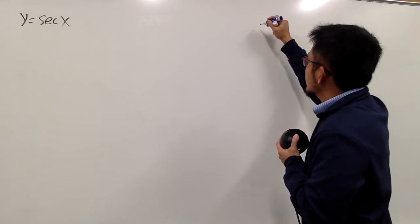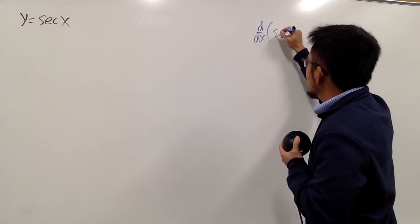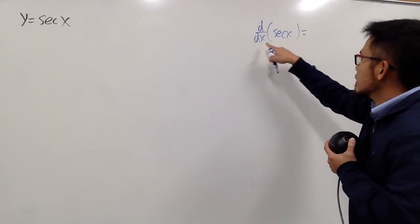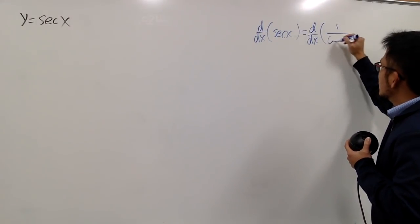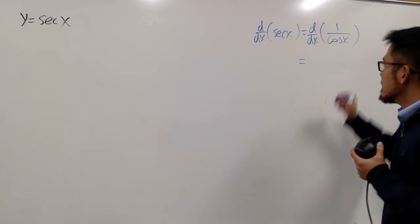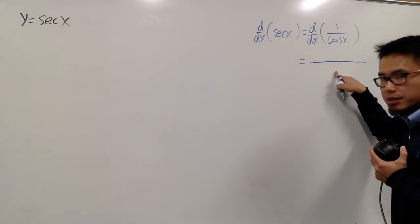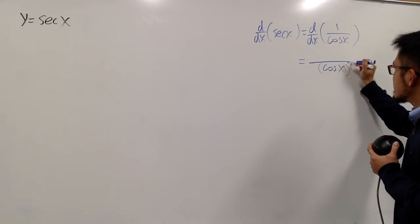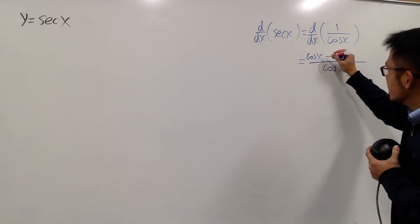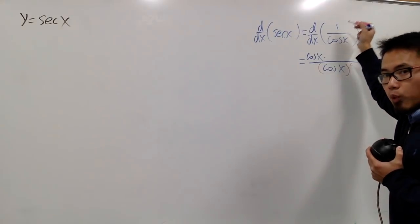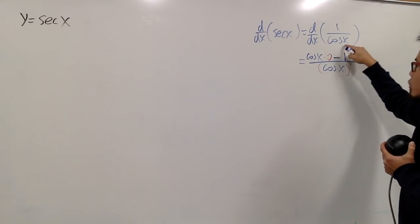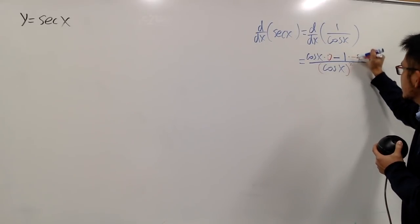To differentiate secant x — we know that secant x is the same as 1 over cosine x, so this is the same as differentiating 1 over cosine x. By looking at this, we can use the quotient rule. We will have to square the denominator first, so I'll put cosine x in parentheses and then square that. On the top, we will have the denominator first — that's cosine x — and we multiply by the derivative of the top. The derivative of 1 is equal to 0. And then we minus the top function, which is 1, times the derivative of the bottom function, which is negative sine x.